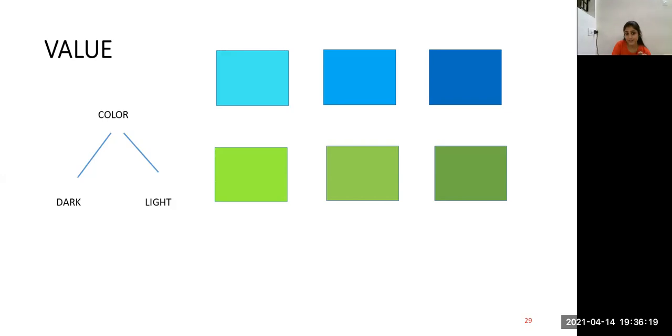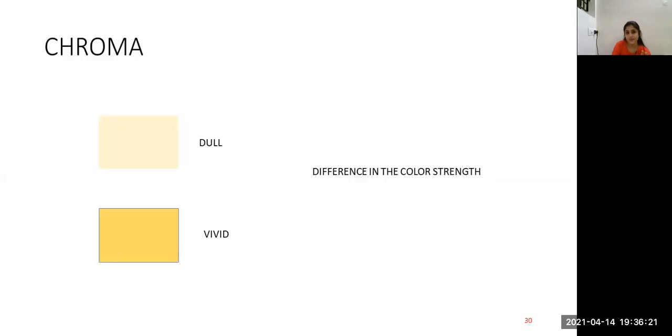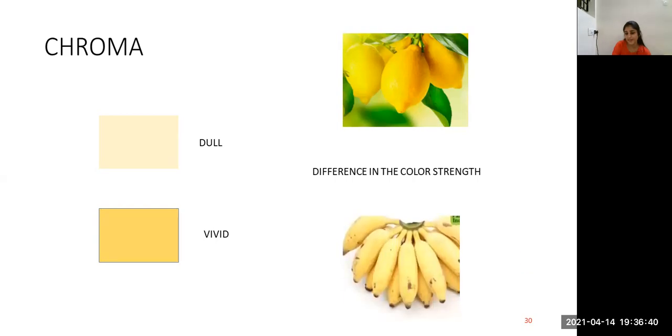Chroma is the difference in the color strength. Like dull, the same color appears dull and vivid. The color, it is the saturation of the particular color. It is called as chroma. The lemon appears vivid when compared to banana, which is dull color. This is called as chroma.